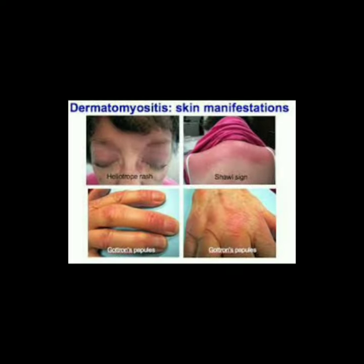Dermatomyositis skin manifestations include the heliotrope rash, the shawl sign, Gottron's papules, and Gottron's sign.